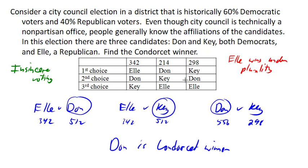This is very common in American politics when we have more than three candidates, because under the plurality method we end up voting against the people we don't like. When there's a small third party candidate, we usually don't vote for them — sometimes insincerely — because we feel they have no chance to win, and so instead we give our vote to maybe our second choice, rather than who would actually be our first choice. That is insincere voting, which is a common problem with plurality as well as some of the other methods we'll look at.